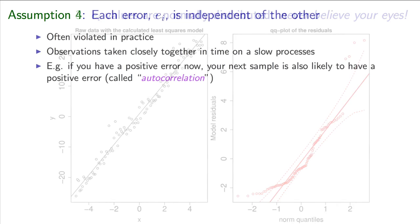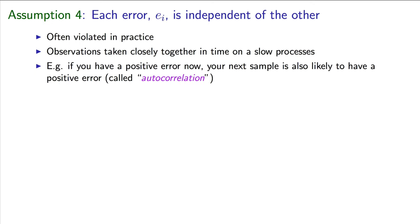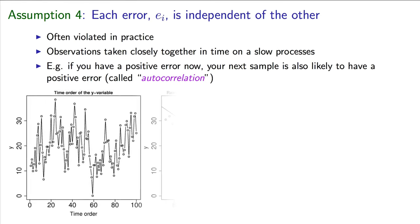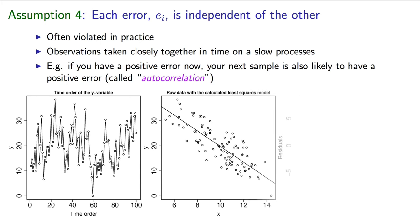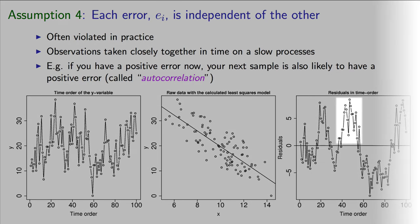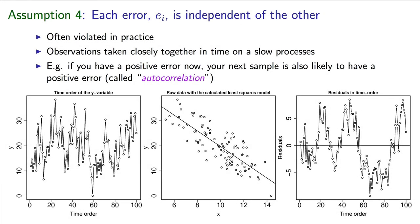We will also require our errors to be independent of each other. That is often violated in engineering processes as well, especially if we take observations close together in time on a slow-moving process. If you have a large positive error at this time instant, your next sample at the following time instant will likely also have a positive error.